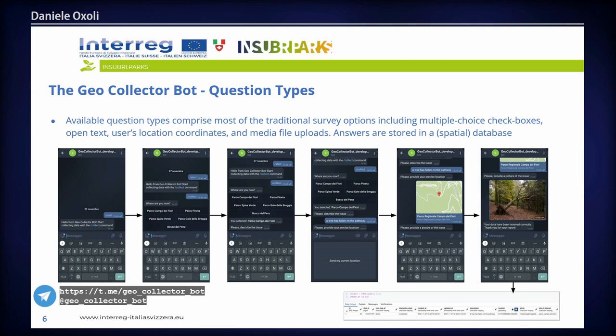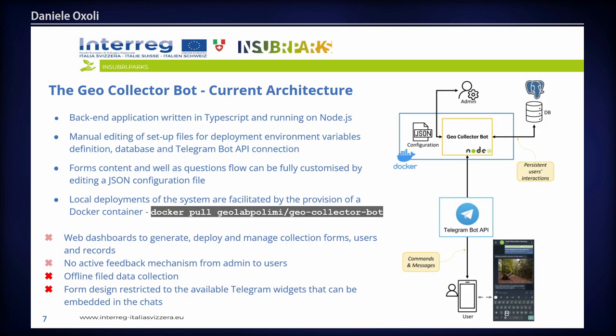The collected information is organized and stored in a PostGIS database. The current architecture has the GeoCollector Bot as a back-end application written in TypeScript running on Node.js. To customize it, you set some environment variables and edit a JSON configuration file to arrange the question flow as you wish. We also deploy a Docker container to make it easier to try and install.